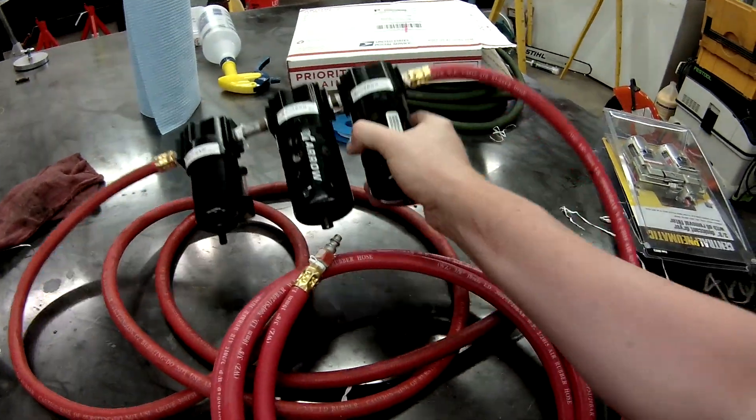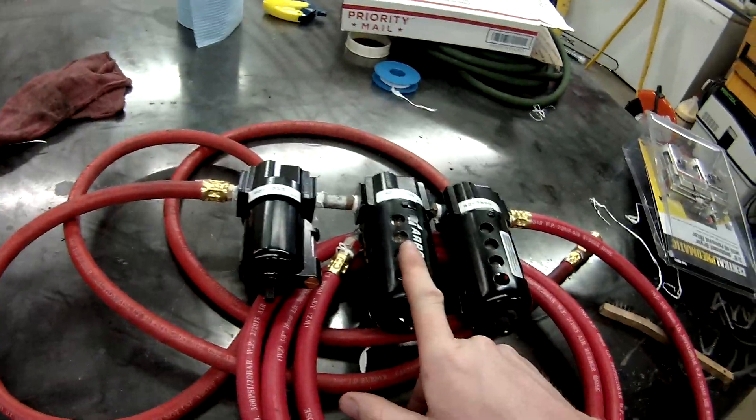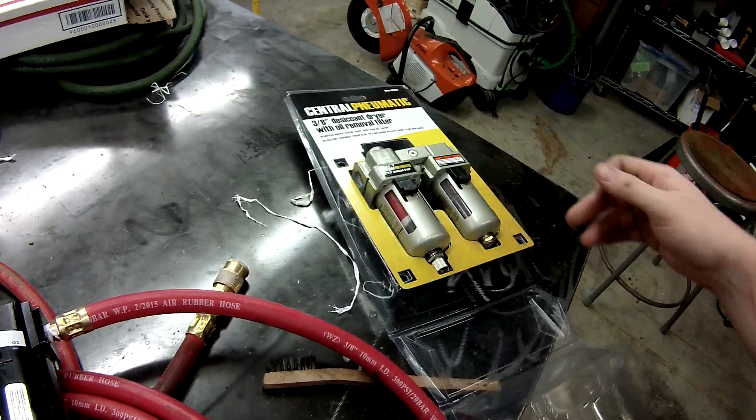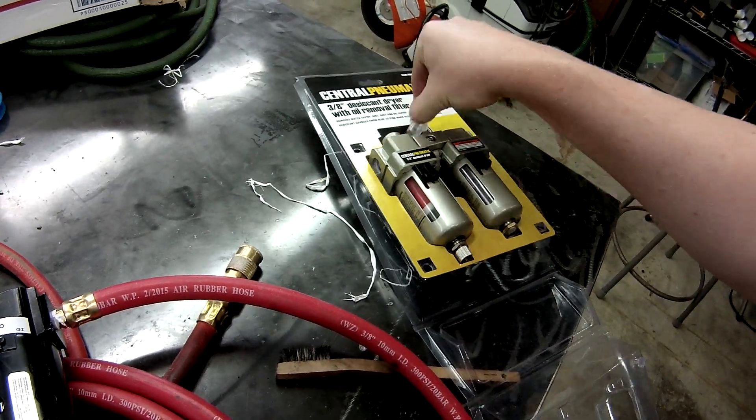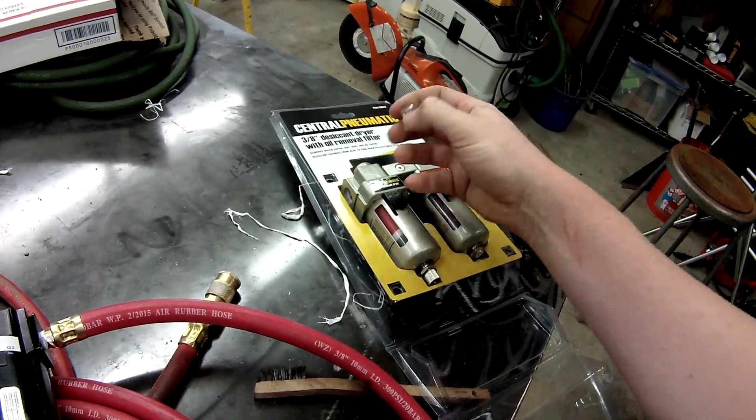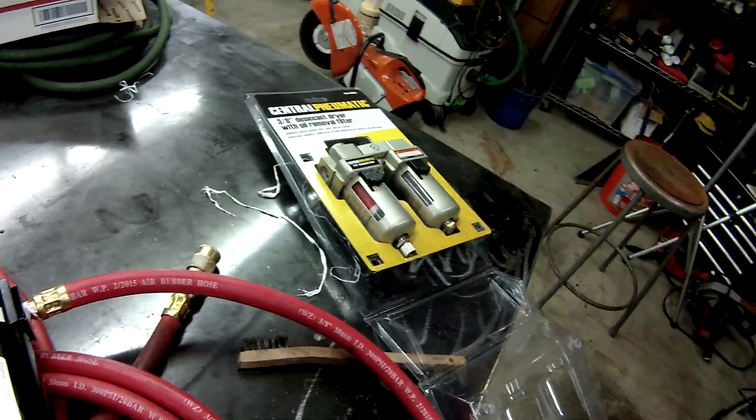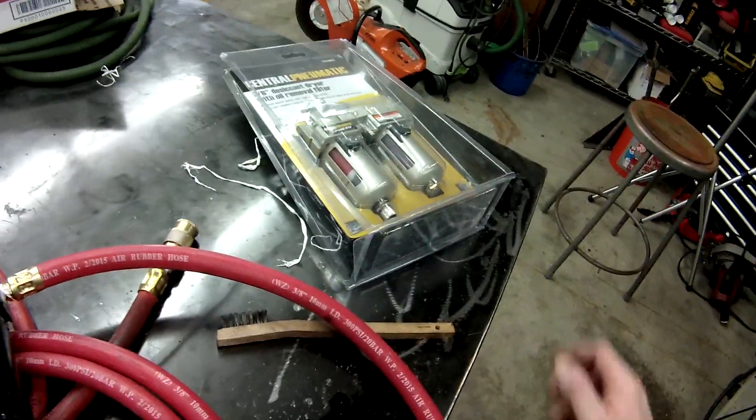Actually I have one of them already. I originally purchased this Harbor Freight air water separator and the first time I put air to it, the top blew off and it just started blowing out air. So I need to return that guy, but what I need clean dry air for is my plasma cutter here.